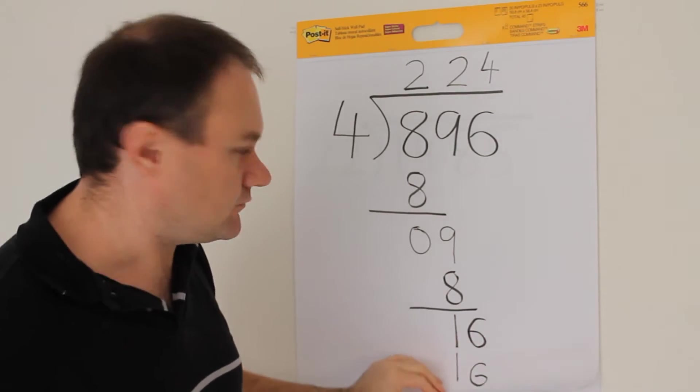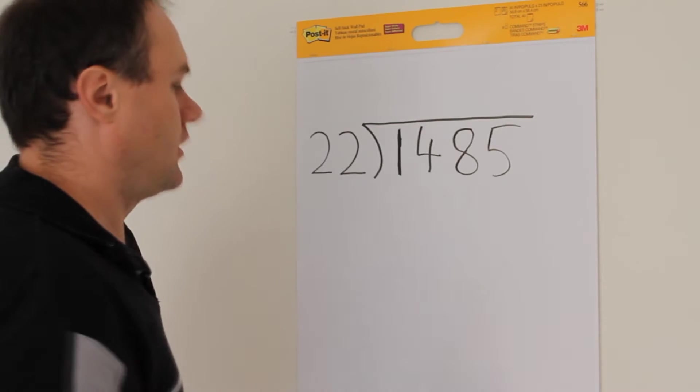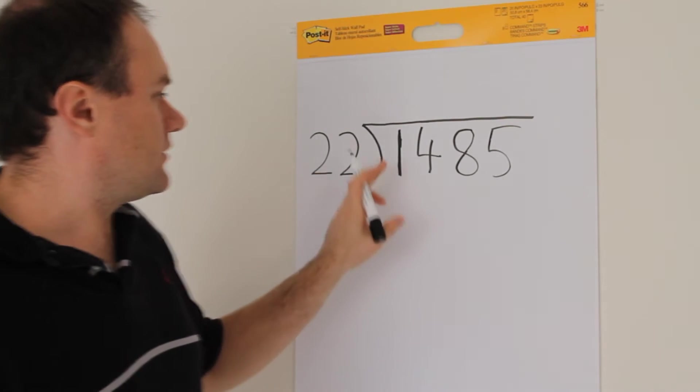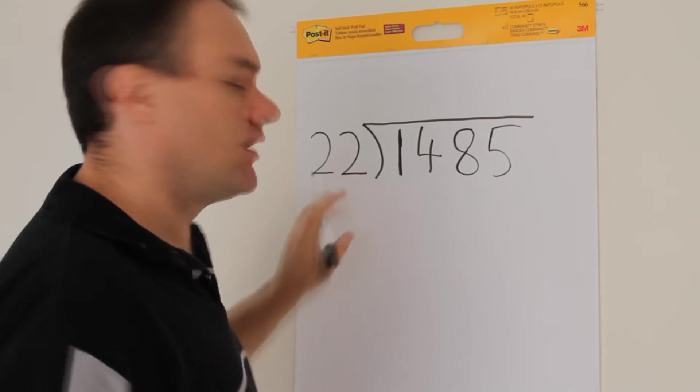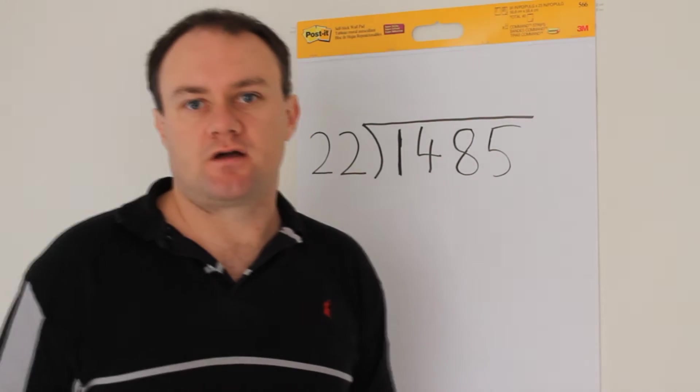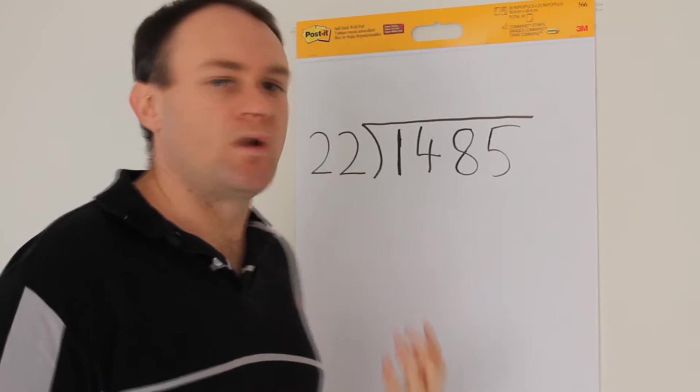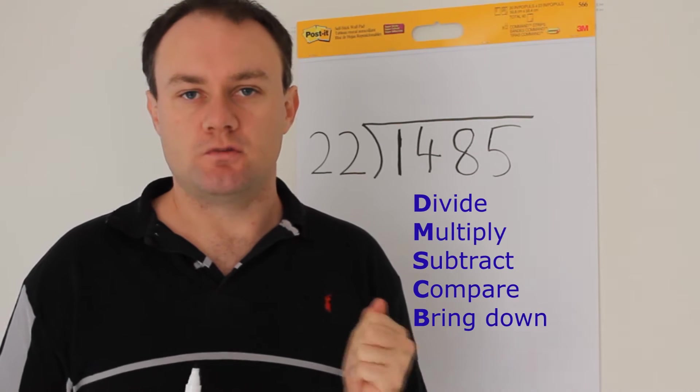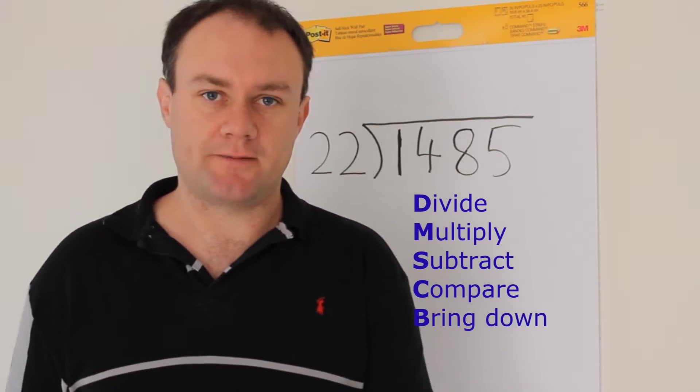So I'll now move on to a more typical long division question. What is 1,485 divided by 22? So the process that you go through, as I went through in that previous question, is you divide, you multiply, you subtract, compare, and then bring down.